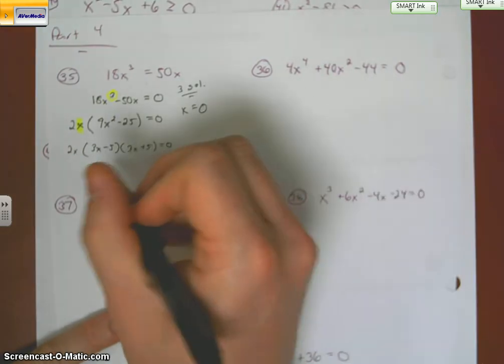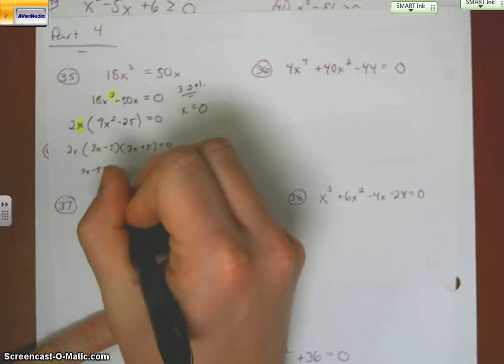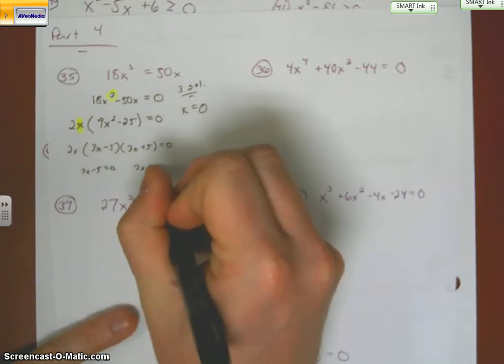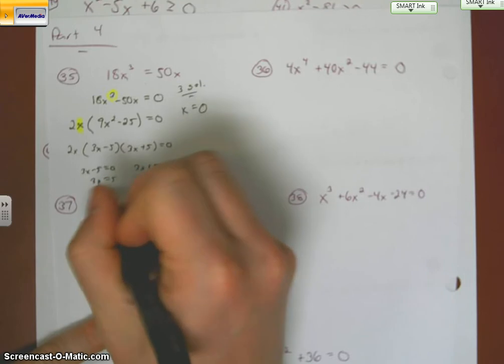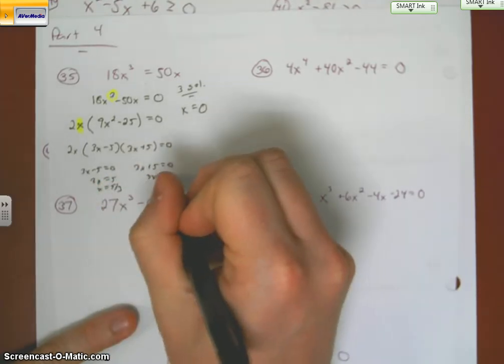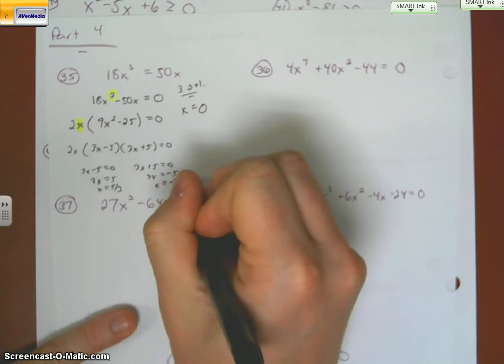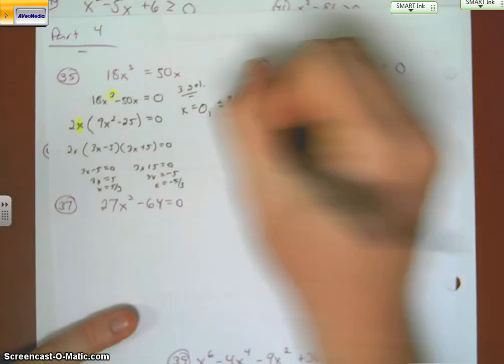So I end up with 3x minus 5 equals zero, and 3x plus 5 equals zero. So 3x equals 5, so x equals 5 thirds, while this one will be its opposite. So I end up with plus and minus 5 thirds.